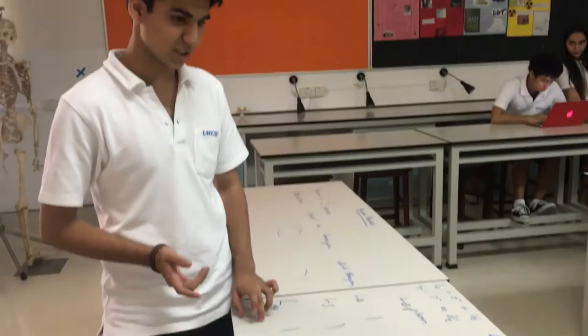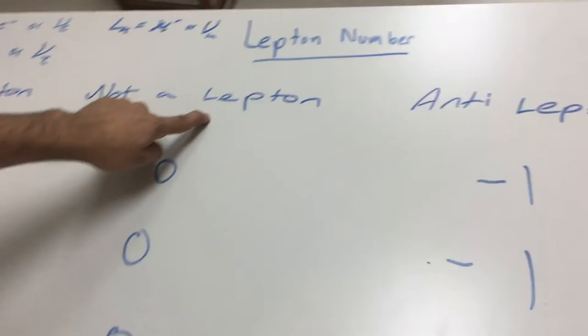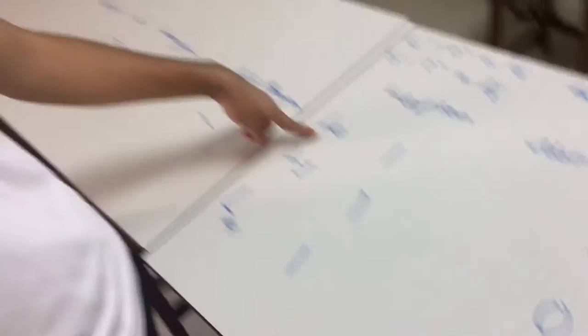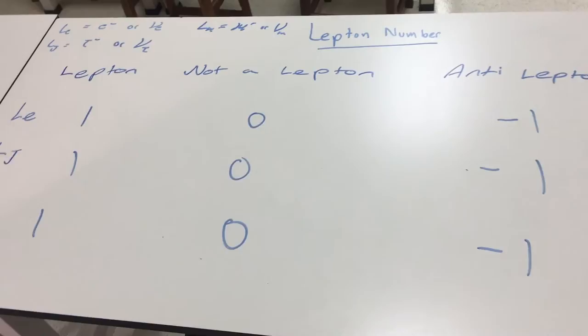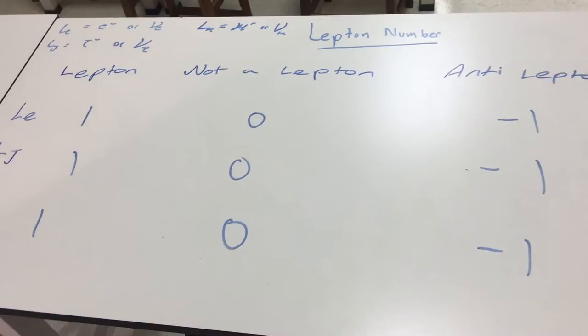And now, for each of these three different types of lepton numbers, we have three different numbers based on whether it's a lepton, whether it's not a lepton, or an anti-lepton. If it is a lepton, then it has a lepton number of one. If it's not a lepton, it has a lepton number of zero. And if it's an anti-lepton, so the opposite of the lepton, it has a number of minus one. In order for some reactions and exchanges to be made, this number must be conserved throughout the reaction.